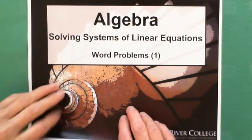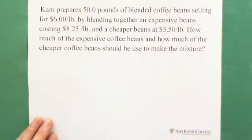So I made one question. Let's see. Ken prepares 50 pounds of blended coffee beans selling for $6 per pound by blending together an expensive beans costing $8.25 per pound and a cheaper beans at $3.50 per pound. How much of the expensive coffee beans and how much of the cheaper coffee beans should he use to make the mixture?